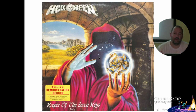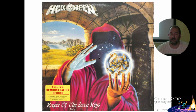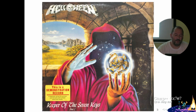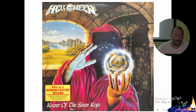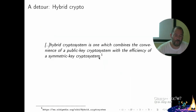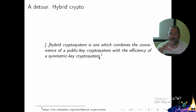Klucznik is basically a key management thingy — it's the keeper of the seven keys. It's just such a brilliant illustration of the whole concept I had to steal this cover. But first, before we get into the topic, I'm going to do a short detour.